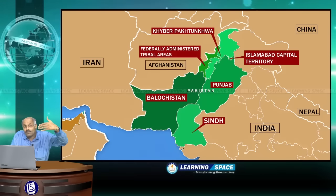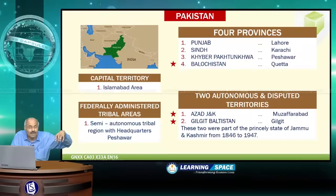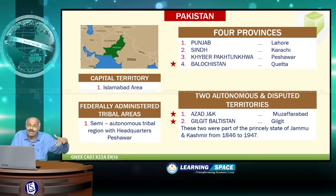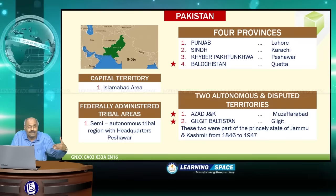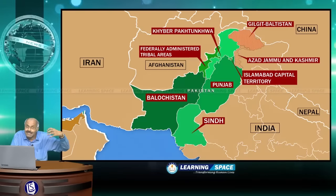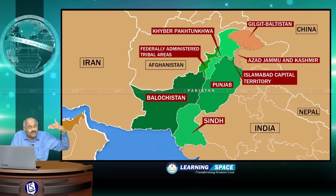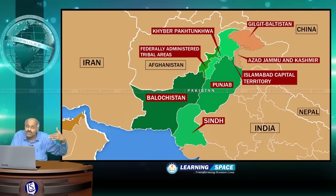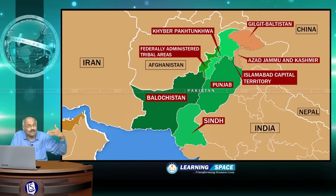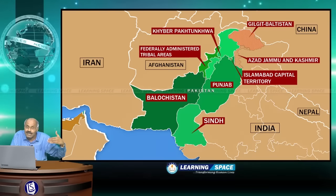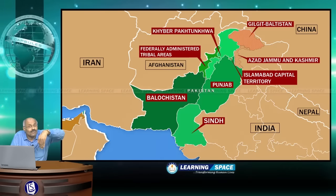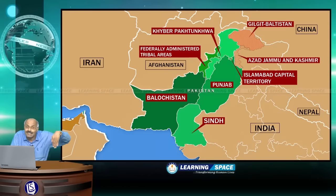So in total: four provinces, one capital territory of Islamabad, and one federally administered tribal area. In addition to these, there are two disputed territories with autonomous powers claimed by Pakistan — Azad Jammu Kashmir with Muzaffarabad as capital, and Gilgit-Baltistan with Gilgit as capital. These two autonomous and disputed territories were acceded to India as per the Instrument of Accession of Raja Hari Singh in 1947.